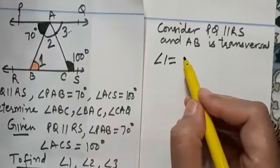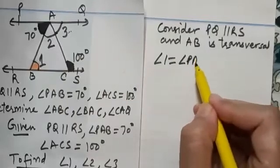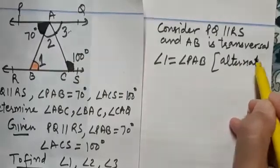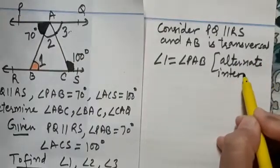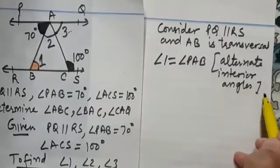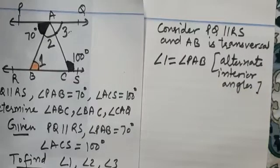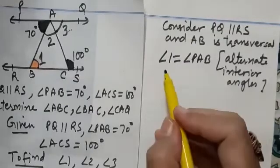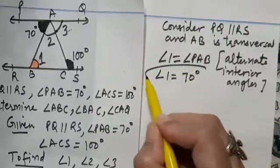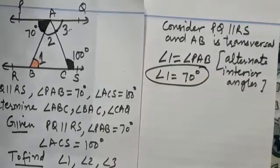angle 1 is equal to angle PAB alternate interior angles and we know that when two parallel lines are intersected by a transversal, alternate interior angles are equal. So angle 1 will be equal to 70 degrees. So you have found the value of angle 1.